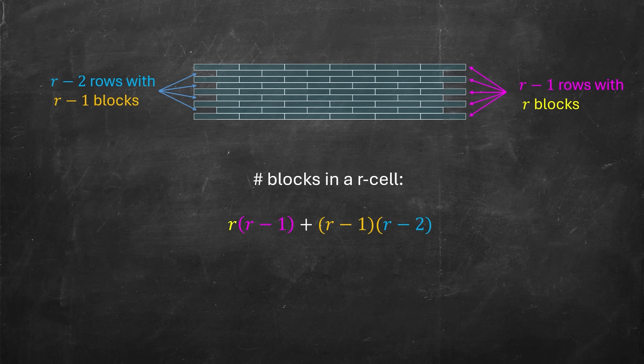So if I want to figure out the total number of blocks in my R cell, well, it's R blocks times R minus one rows, and then R minus one blocks times R minus two rows. Expand that out, you get two times R minus one squared blocks in my R cell.